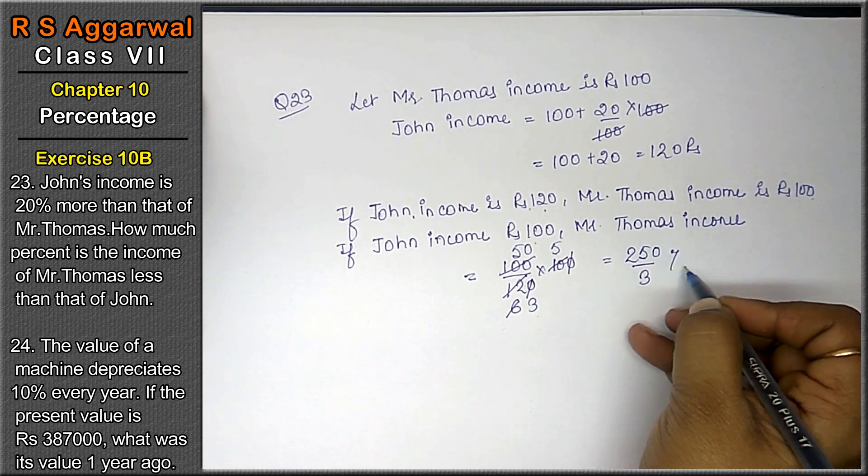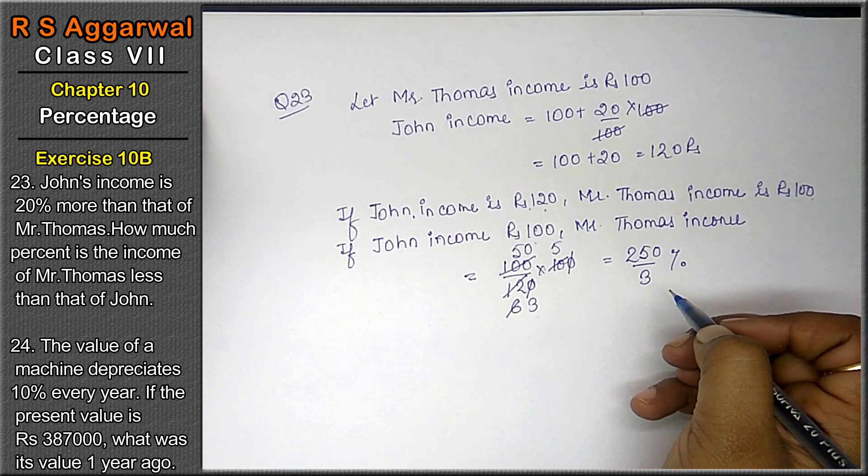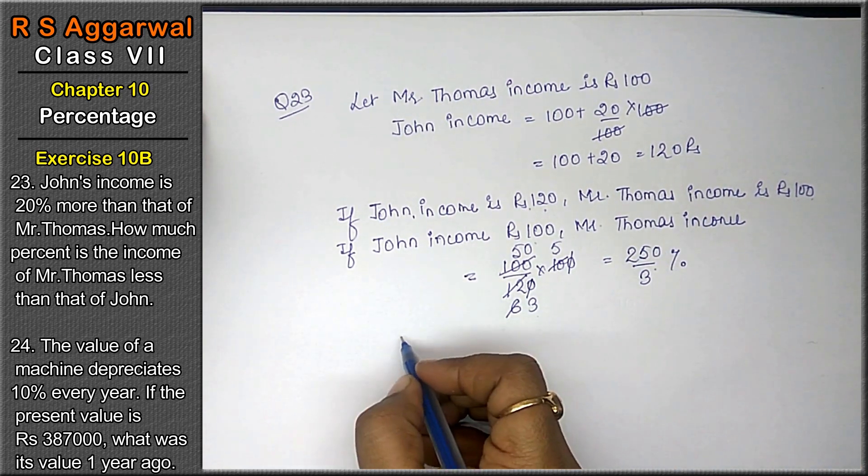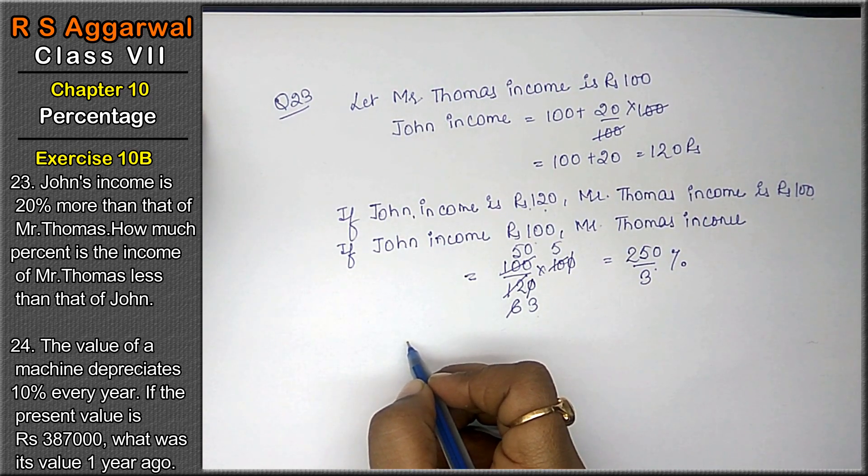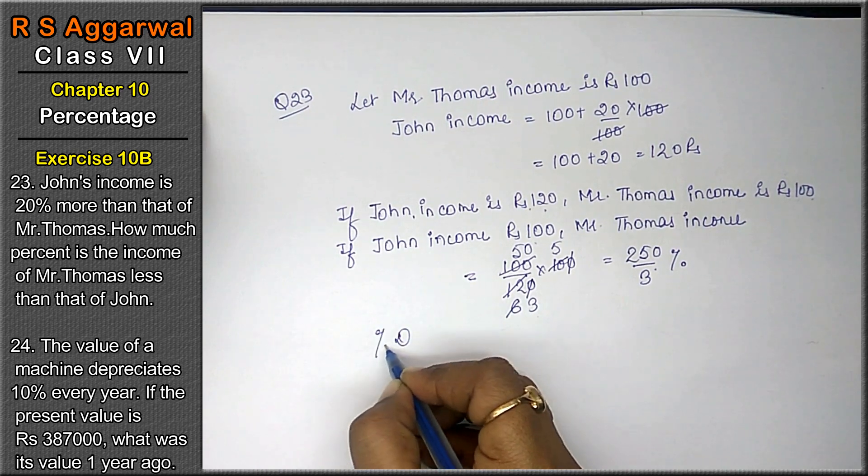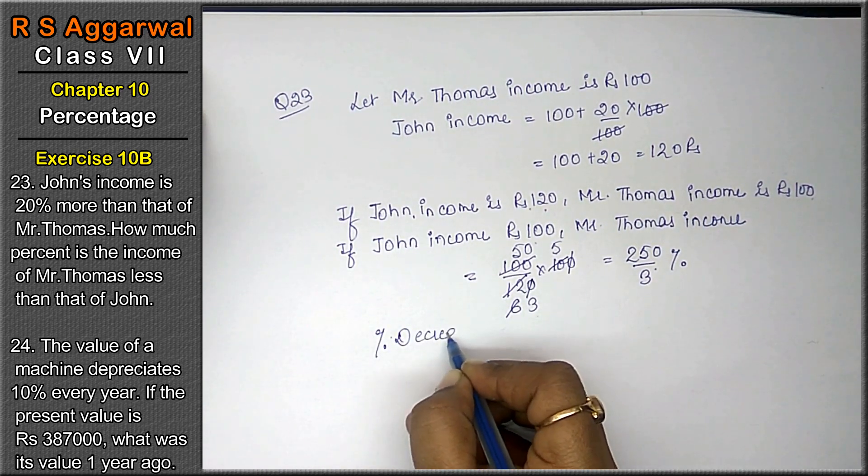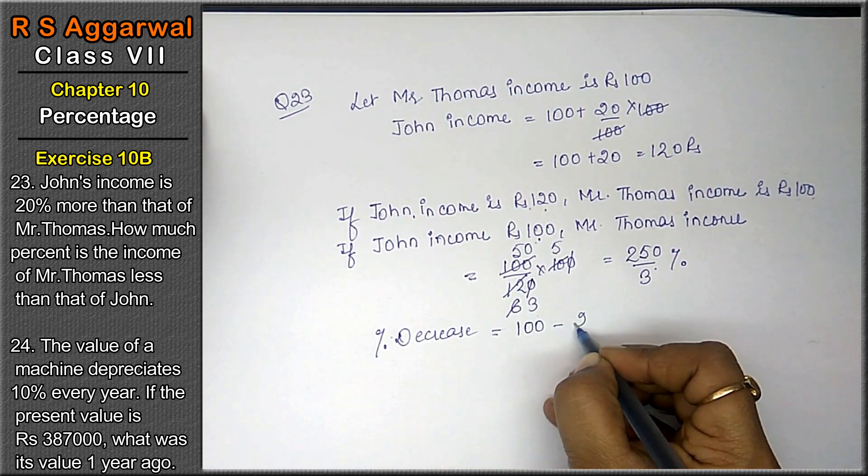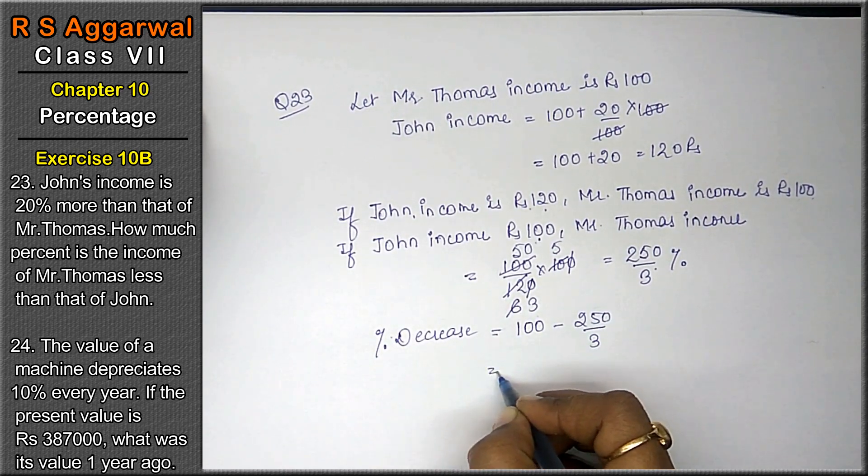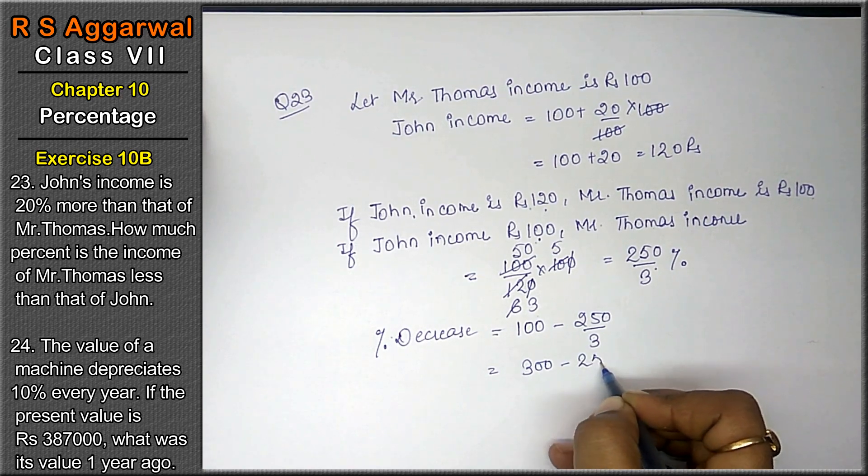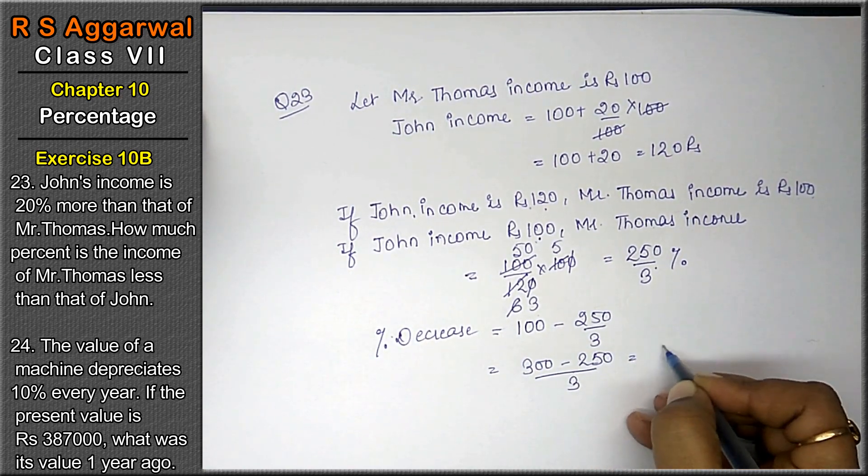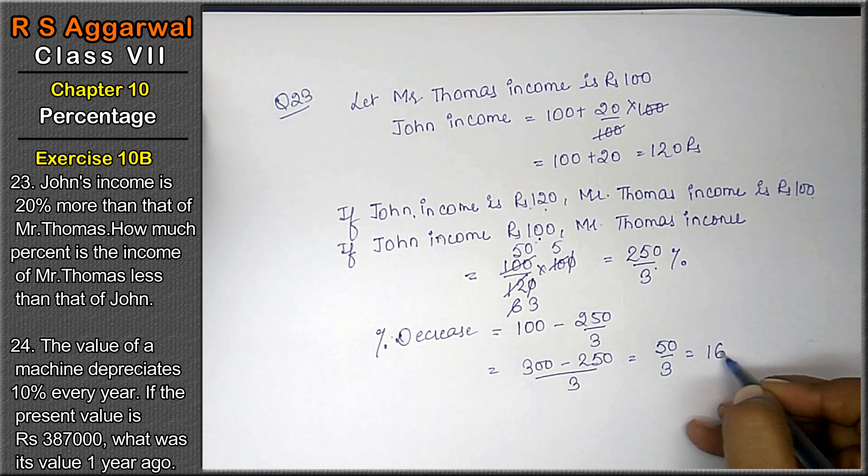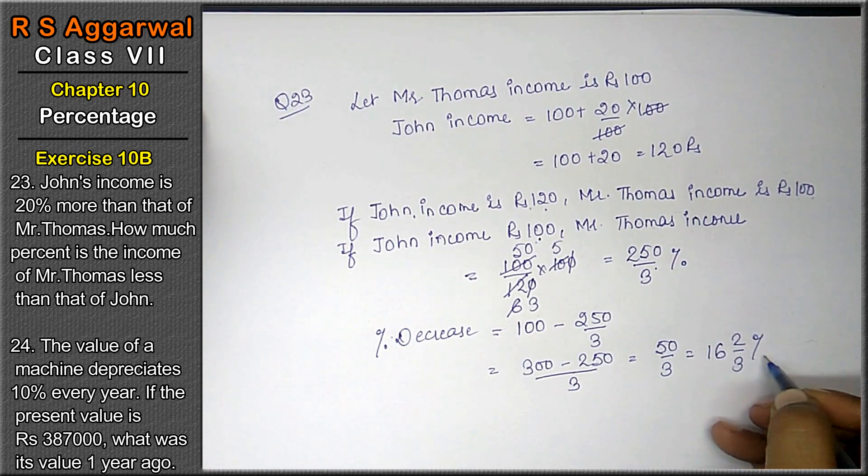Now what he is saying: how much percentage is the income of Mr. Thomas less than John's income? Percentage of decrease equals to 100 minus 250 upon 3. That means 50 upon 3. Answer will be 16 and 2 upon 3 percent.